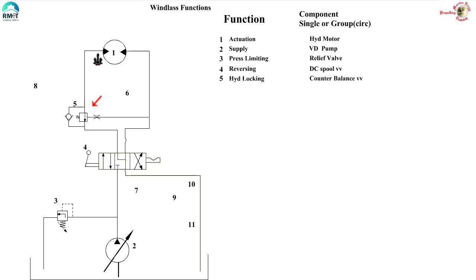So, the identified function is hydraulic lock and the component is counter balance valve in this circuit. Oil will flow through the check valves to lift up the anchor. But the oil cannot return back to the tank unless it gets the pilot pressure from the right hand side. So, the counter balance valve creates a hydraulic lock which prevents the falling of the anchor in neutral position.